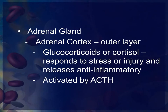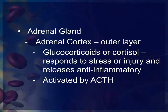The adrenal gland is located on top of the kidneys. The name indicates the location: 'renal' refers to kidneys and 'ad' refers to adjacent, meaning near or next to the kidneys. There are two parts to the adrenal gland. The outer layer is called the adrenal cortex, which produces glucocorticoids, or cortisone. These respond to any type of stress or injury and carry out anti-inflammatory responses. The adrenal cortex is activated by adrenocorticotropic hormone, produced by the anterior portion of the pituitary gland.